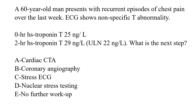Moving to the second idea. A 60-year-old man presents with recurrent episodes of chest pain over the last week. EKG shows non-specific T-wave abnormality. His admission high sensitivity troponin is 25, his two-hour high sensitivity troponin is 29, with the upper limit of normal being 22 — the 99th percentile is 22. What is the next step? Cardiac CTA, coronary angiography, stress EKG, nuclear stress testing, or no further workup?